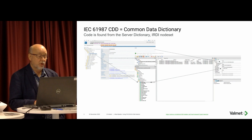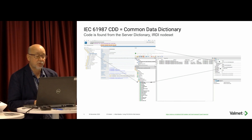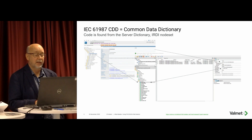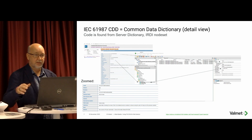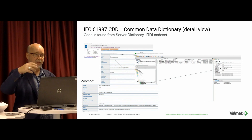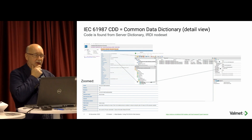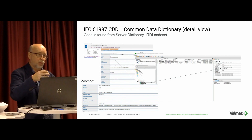On the IEC web pages you can look up the actual value, and here in UA Expert the display name is the actual value. The node ID is using the IEC specification code — I have a zoomed version here — and the code binds the actual value to the dictionary as a hash dictionary entry in the variable you are using. That is how the IRDI node set is bound into the PA-DIMM, and that is the key point here.